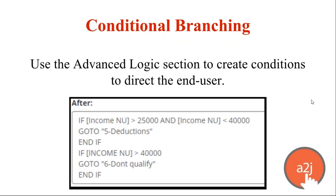The next topic is conditional branching. Conditional branching uses advanced logic — conditions — to direct your end user based on inputs they've given you. It's more than a simple button moving them forward; this logic might take them out of that button path to a different place based on some answer they've given. The screenshot here is an example of after logic — after they hit the button and enter some information and click continue, the logic runs.